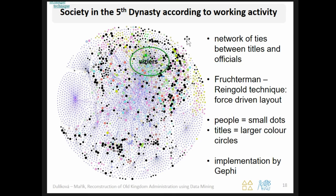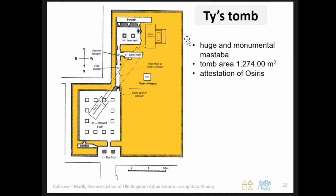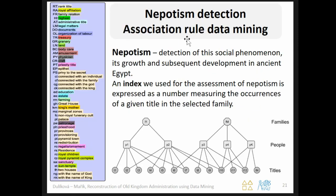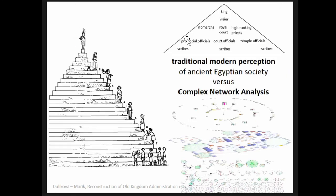Processes and causal links between events can be detected and better understood not only through discoveries by uncovering ancient Egyptian monuments, but also using new research approaches applied to already known data and pieces of knowledge, such as the method of complex network analysis. Thank you for your attention.